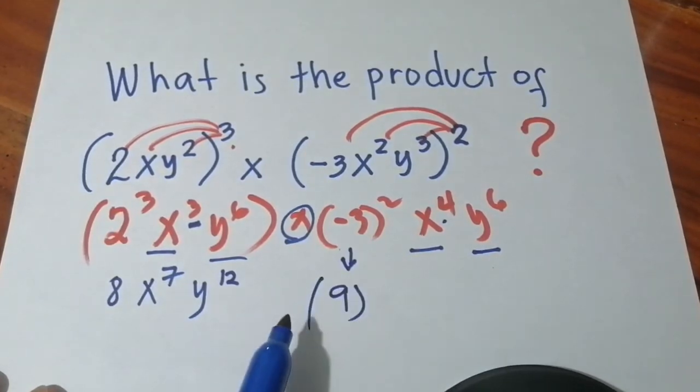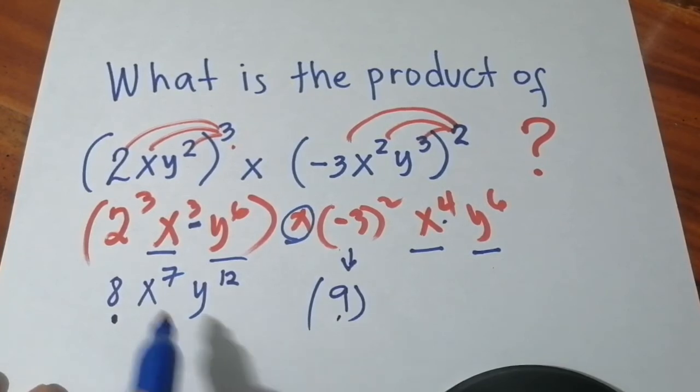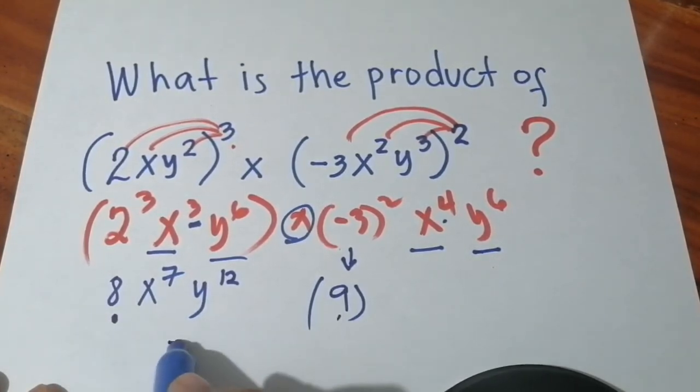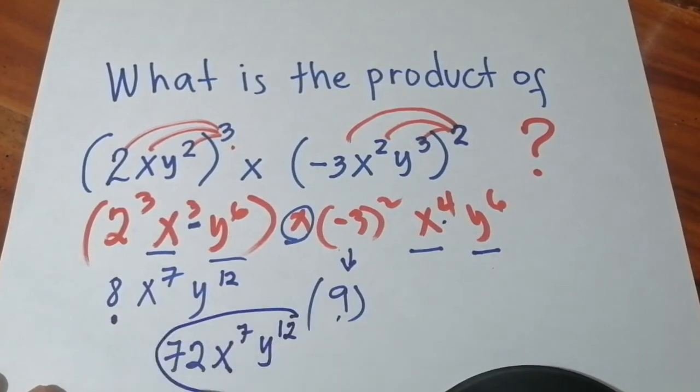What are we going to do with the 9 and the 8? We are going to multiply. So the final answer is 8 times 9, that will be 72. So 72x raised to the seventh power, y raised to the twelfth power. That's the answer already.